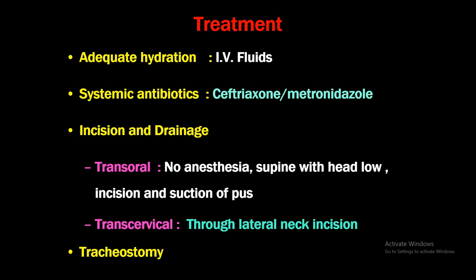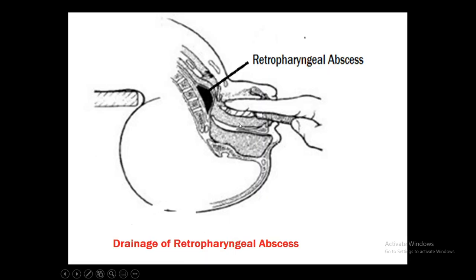Treatment of retropharyngeal abscess: adequate hydration and IV fluids, systemic antibiotics like ceftriaxone and metronidazole given empirically. Incision and drainage can be transoral or transcervical. For transoral drainage, no anesthesia is required — patient is kept supine with head low to avoid aspiration, and strong suction is used to remove pus immediately. Transcervical drainage is performed through a lateral neck incision where the bulge is accessible, though a cutaneous fistula may form. Tracheostomy is performed when the patient has respiratory distress.